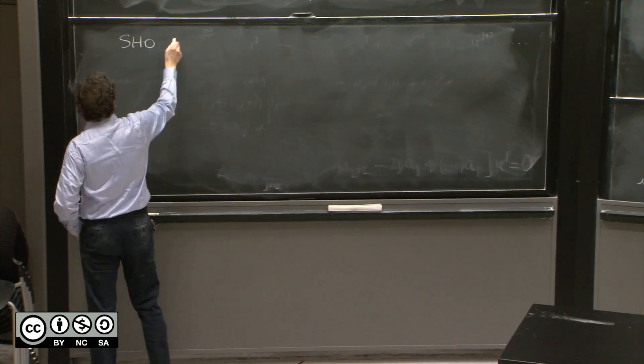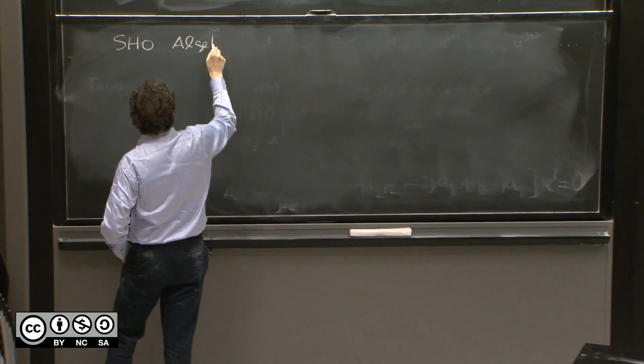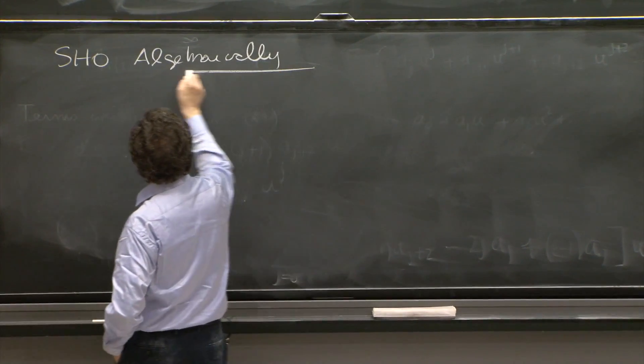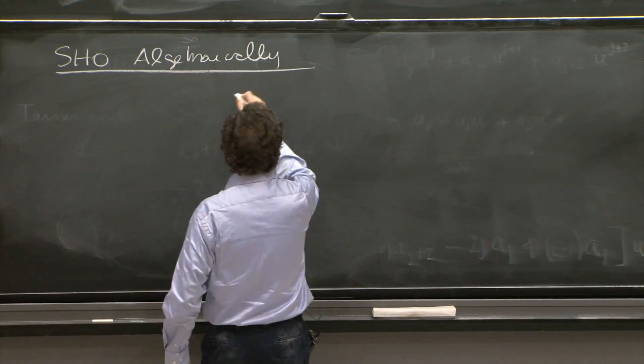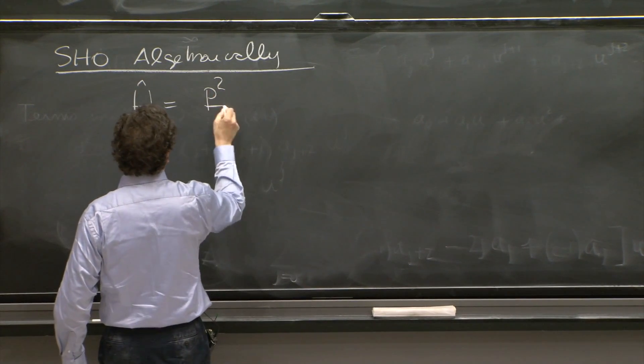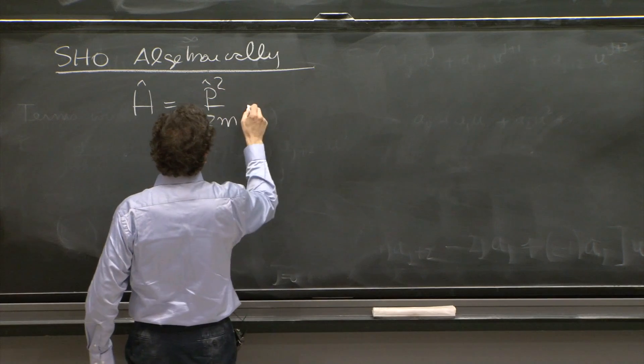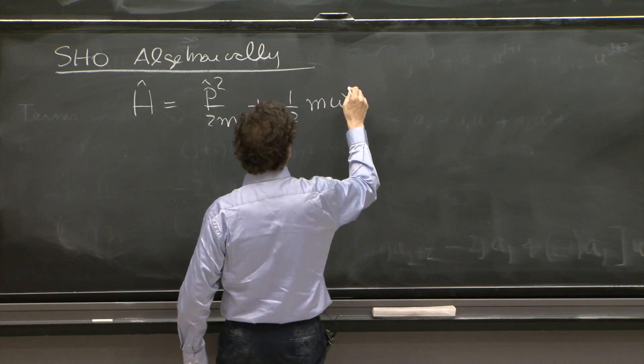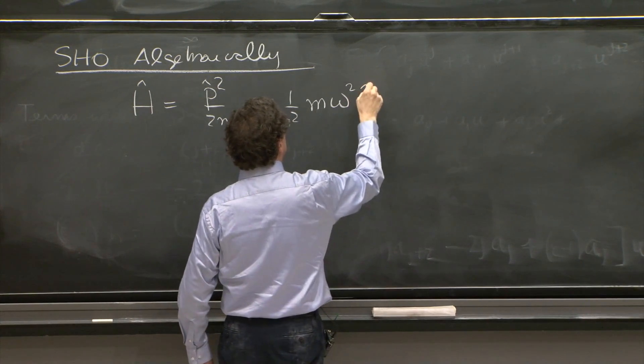SHO algebraically. We go back to the Hamiltonian: p squared over 2m plus 1 half m omega squared x hat squared.